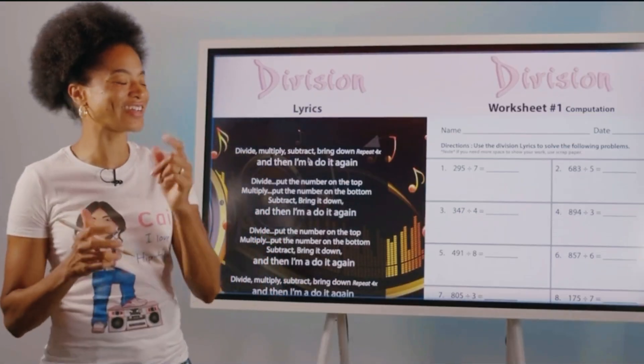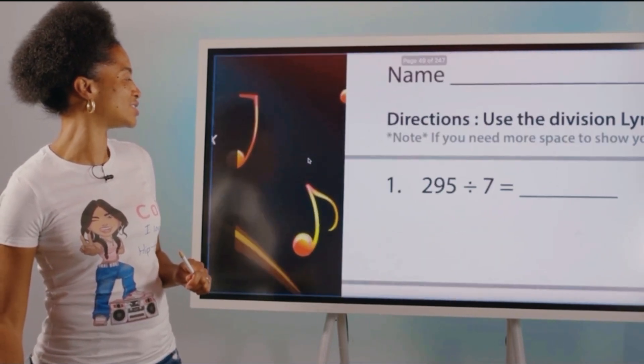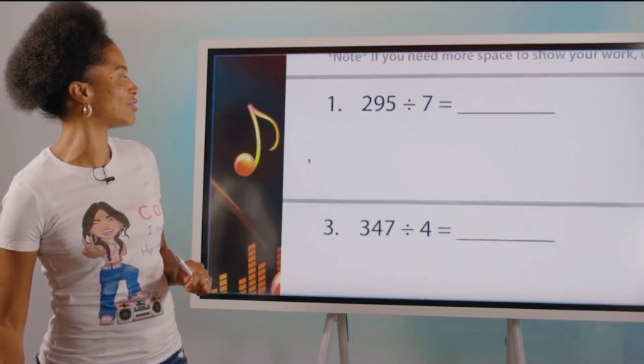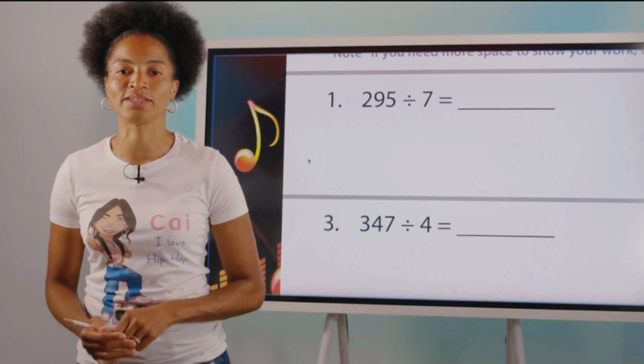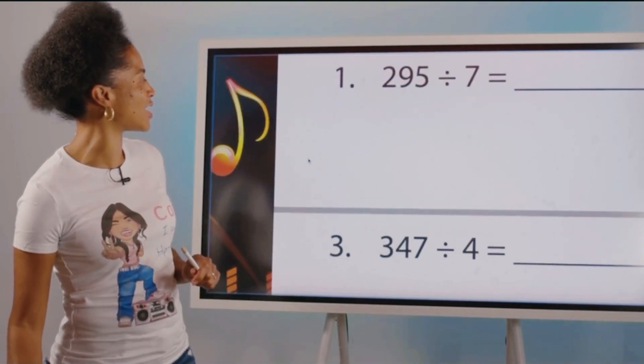Alright, let's get started. We're going to look at question number one which is 295 divided by 7. Which of these numbers would be the dividend? 295. So we're going to put 295 inside of the division sign.